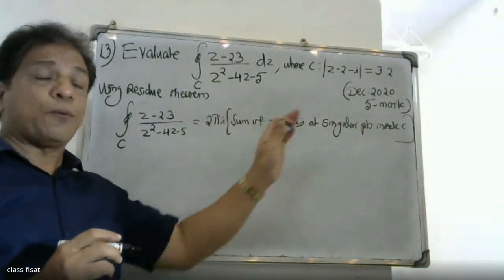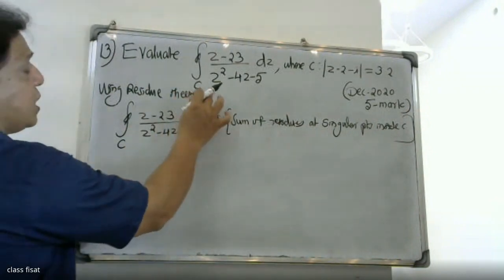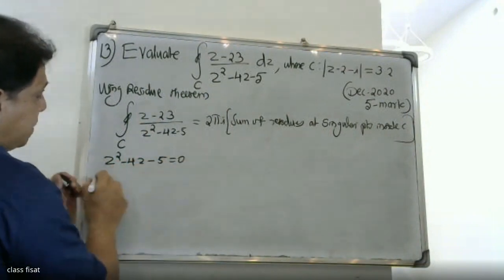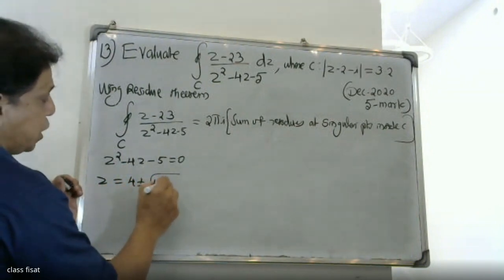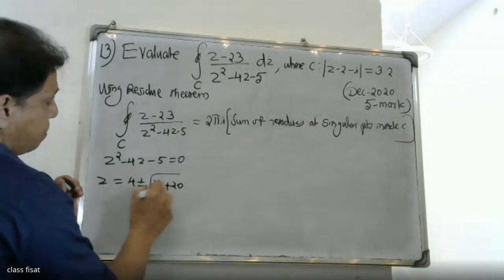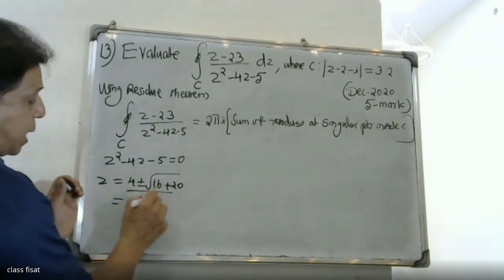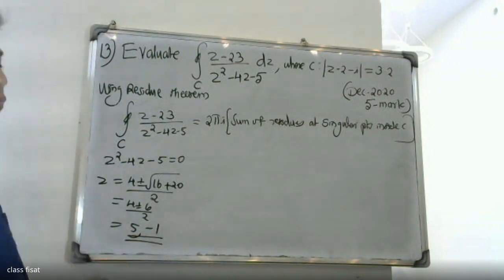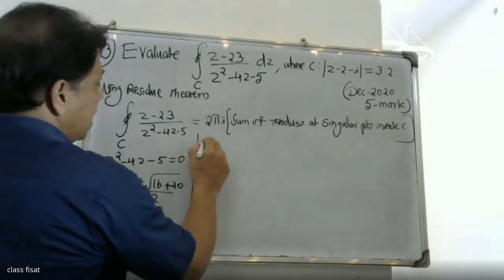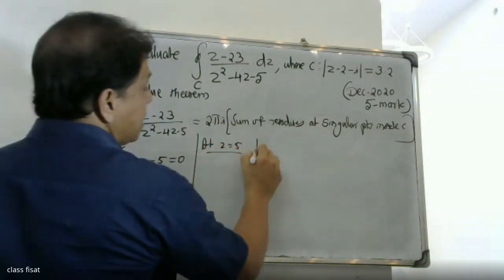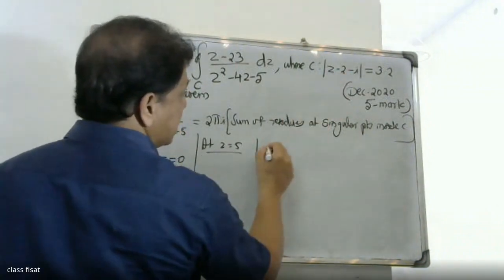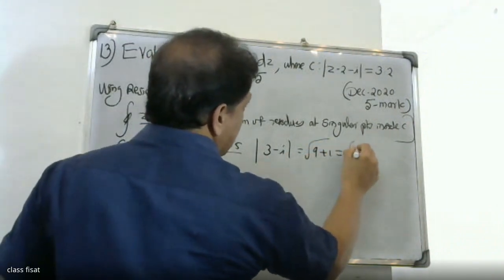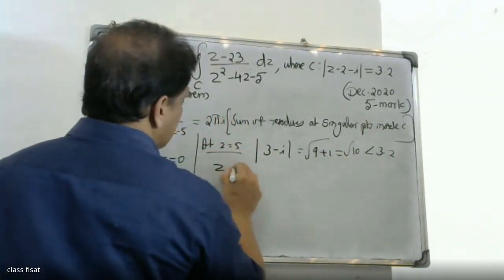To find the singular points, we set the denominator equal to zero: z² - 4z + 5 = 0. Using the quadratic formula, z = (4 ± √(16 - 20)) / 2 = (4 ± √(-4)) / 2, giving singular points z = 2 + i and z = 2 - i, that is z = 5 and z = -1.